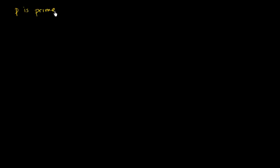So let's assume that p is prime. We're going to set this up to be a proof by contradiction. So we're going to assume that the square root of p is rational, and see if this leads us to any contradiction.